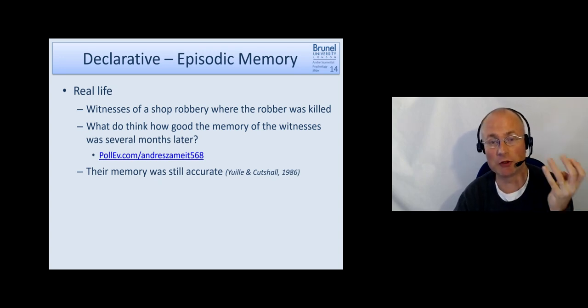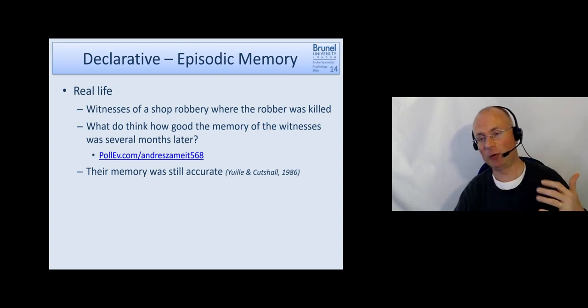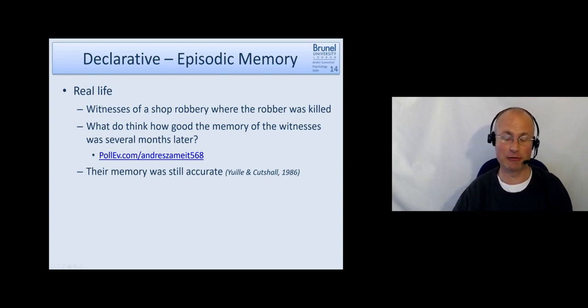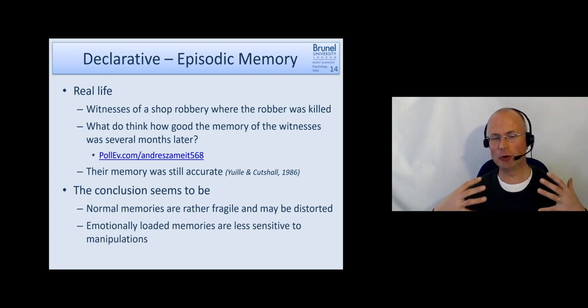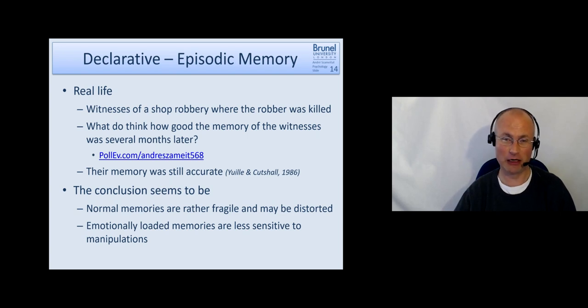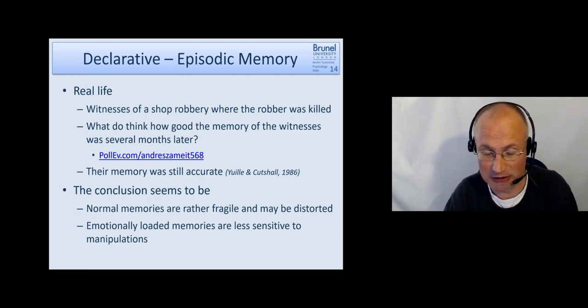And it has been shown that the memory was still pretty accurate. What they did was they compared the reports of the witnesses to the original police reports which they had given a couple of hours or a few days after the incident, and then they tested them again months later. So it seems to be that it's more the normal memories—they are not so intense, stressful memories—which are fragile and may be distorted. But these highly emotionally loaded memories seem to be less sensitive to manipulation. It's not completely ruled out, and you may have a person who is not very emotionally affected or aroused by such a scene, so it doesn't mean that what we just learned is not important for eyewitness testimony. It absolutely is.